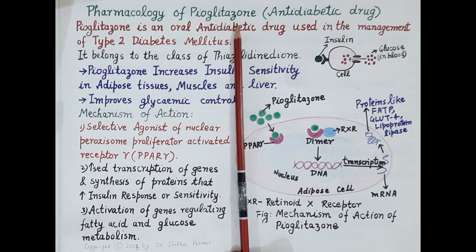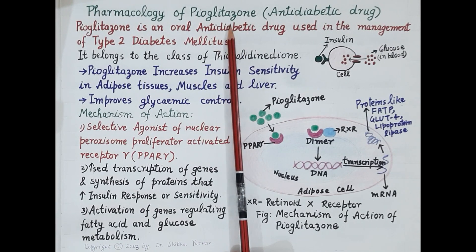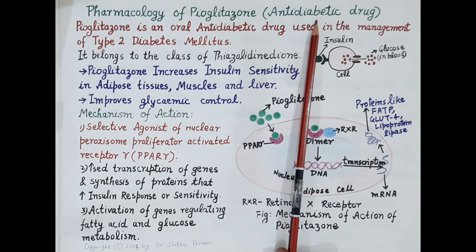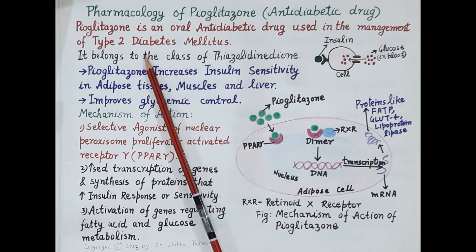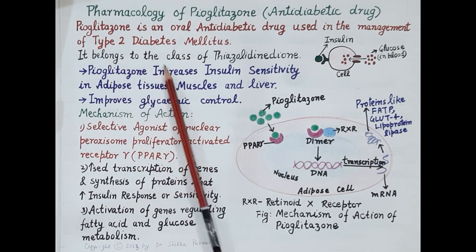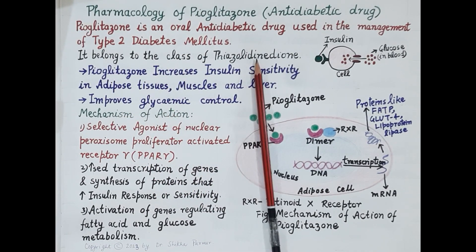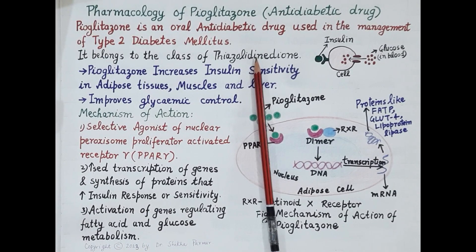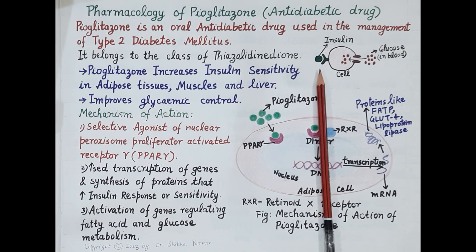Hello students. In today's video we are going to discuss the pharmacology of pioglitazone. Pioglitazone is an oral anti-diabetic drug used in the management of type 2 diabetes mellitus. Pioglitazone belongs to the class of thiazolidinediones. In order to understand the pharmacology of pioglitazone, let's quickly understand how insulin regulates glucose concentration in the blood.